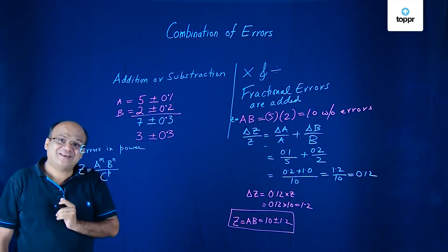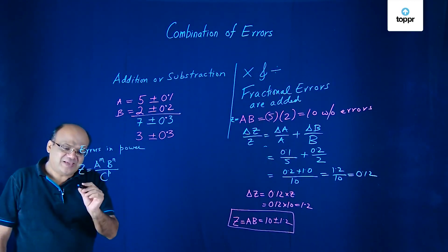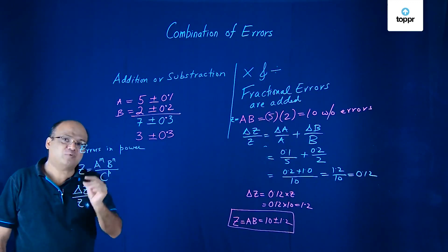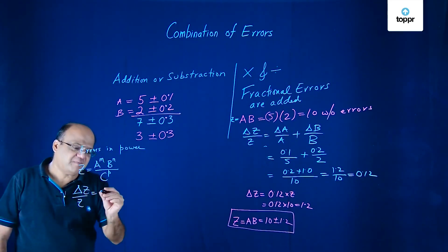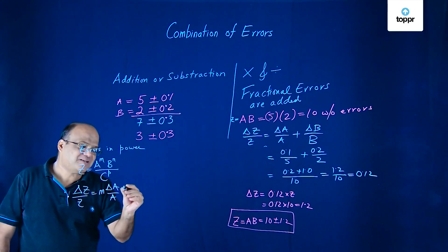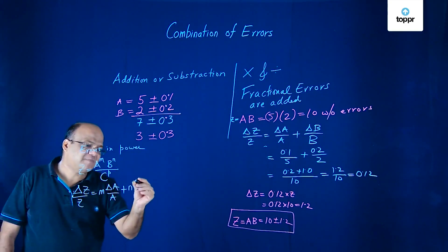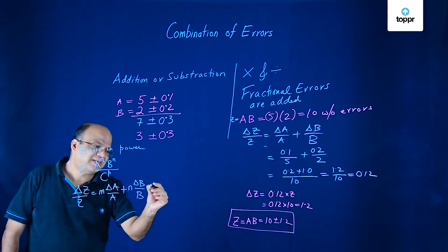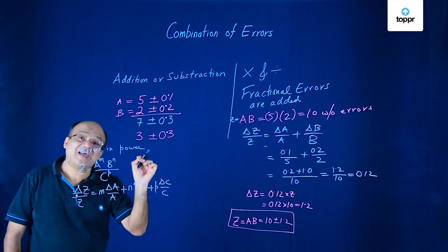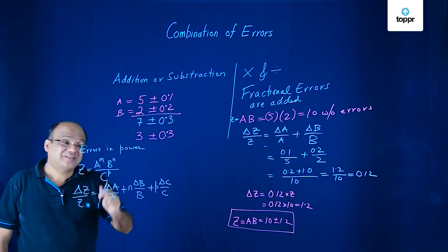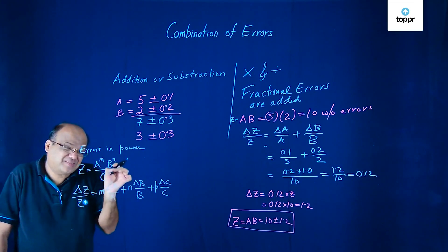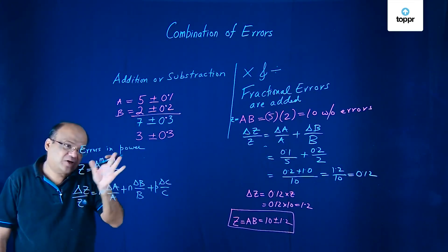So Z is A to the power M, B to the power N by C to the power P. So here again you have to look at fractional errors but the power will become coefficient. So here the power is M. So M delta A by A then plus N delta B by B plus P delta C by C. Please understand also that these errors are typically small. Then you can do all these things.